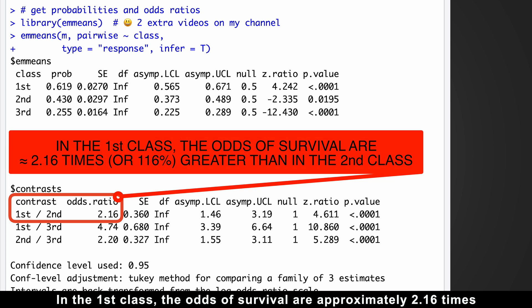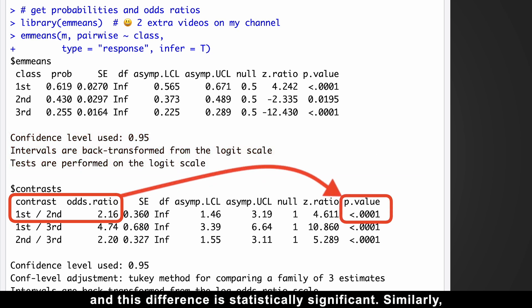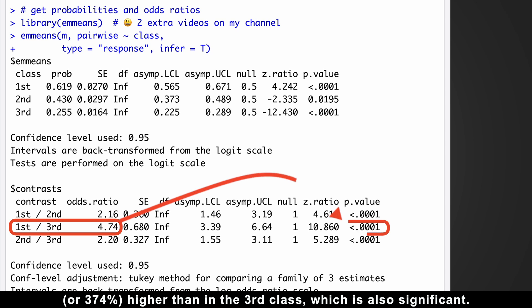In the first class, the odds of survival are approximately 2.16 times, or 116% greater, than in the second class. And this difference is statistically significant. Similarly, the odds of survival in the first class are roughly 4.74 times, or 374% higher than in the third class, which is also significant.